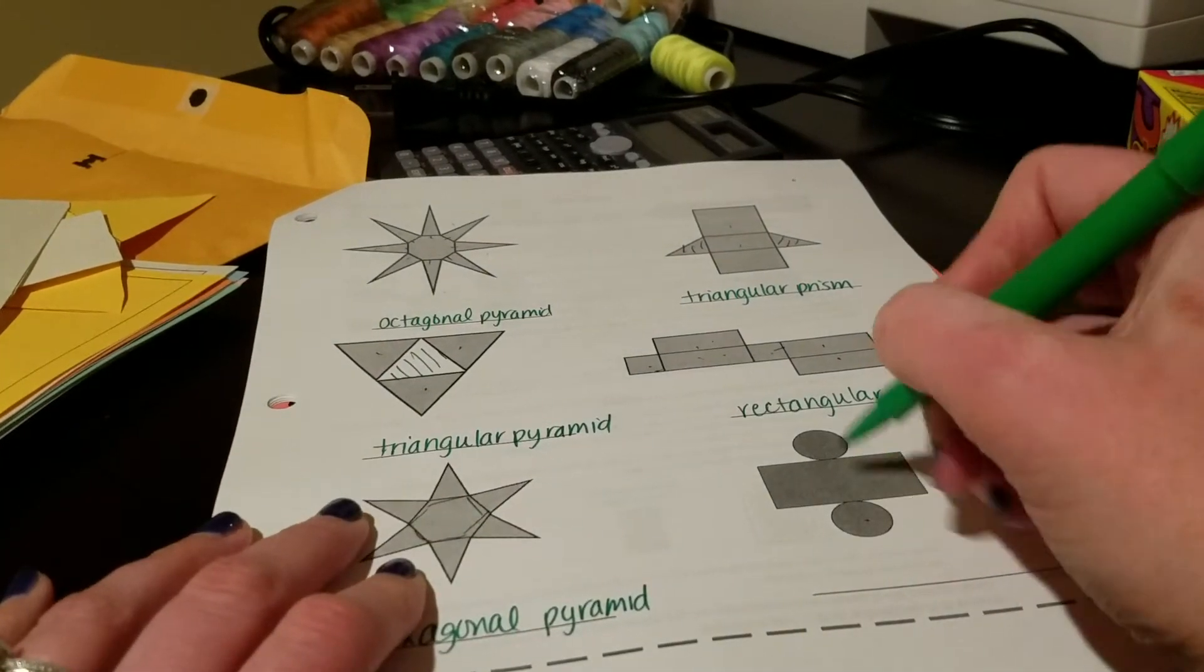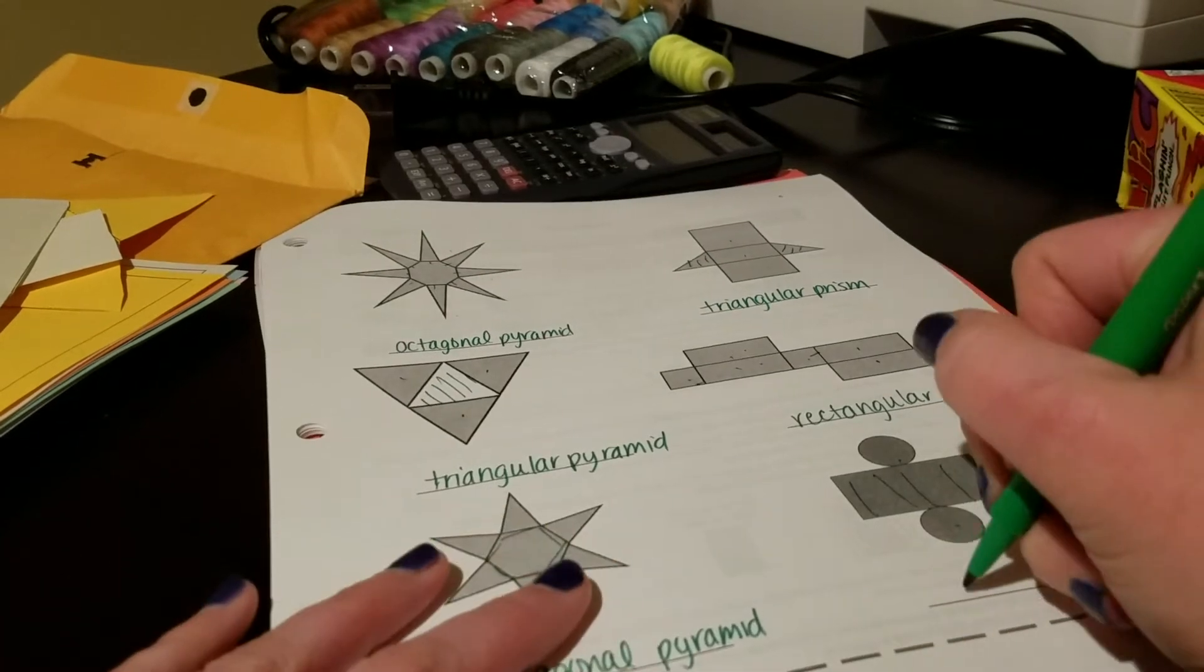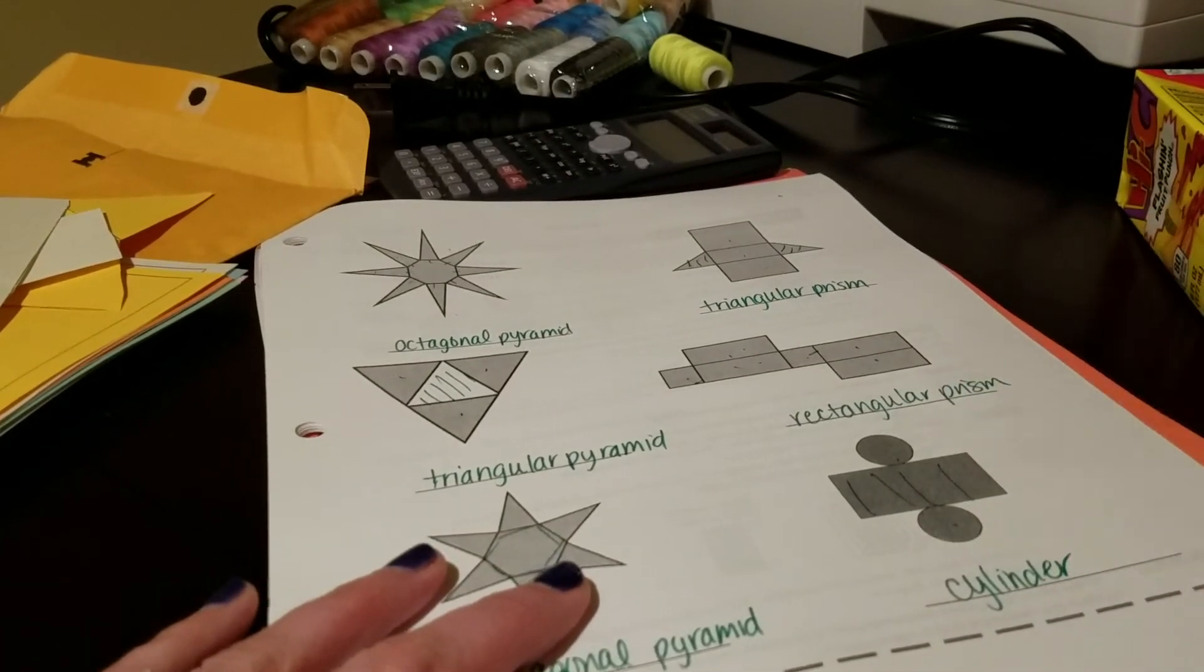And the last one here, we have the two circles with a rectangle that goes around them. So this one is a cylinder.